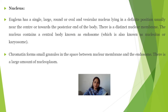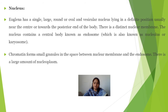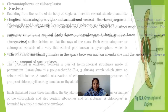A single nucleus is present in Euglena. It is large, rounded, oval, and vesicular, lying in a definite position usually near the center toward the posterior end of the body. There is a distinct nuclear membrane. The nucleus contains a central body known as the endosome. Chromatin forms small granules in the space between the nuclear membrane and the endosome, and there is a large amount of nucleoplasm.